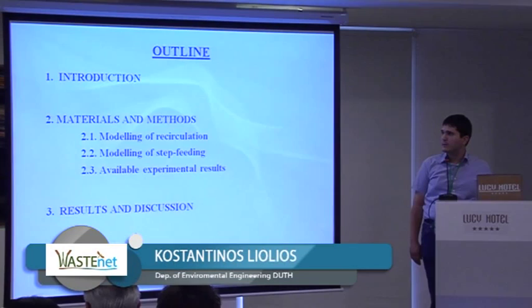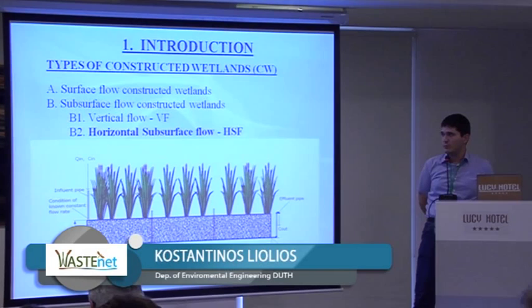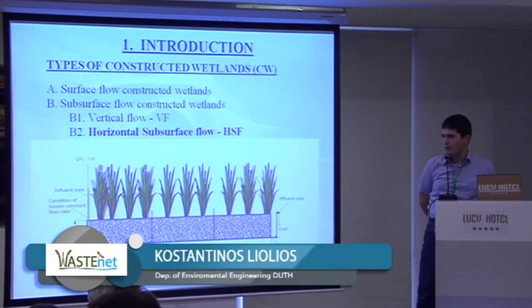As we all know, there are two types of constructed wetlands: surface flow and subsurface flow. In the second category, the flow can be vertical. Our case is horizontal subsurface flow, in which we have an influent pipe and an effluent pipe.